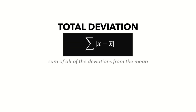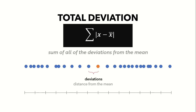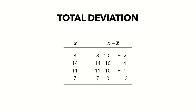One approach to include all data points is to calculate how far each point is from the mean — we call this the deviation, which is the positive or negative distance from the mean. However, if we add all deviations with their respective signs, we always obtain a total of zero because the negative deviations exactly cancel out the positive ones. For example, with the data set 8, 14, 11, and 7, the mean is 10. The deviations are −2, +4, +1, and −3, and their sum is zero. It would be useless to get the total deviation if it always equals zero.